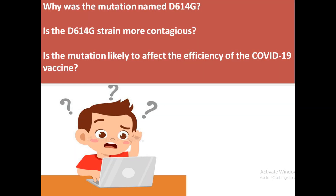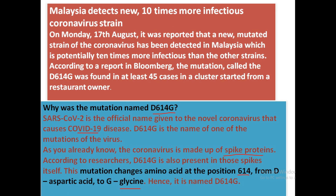The questions coming up are: why was the mutation named D614G, is the D614G strain more contagious, is the mutation likely to affect the efficiency of COVID-19 vaccines, and many more. On 17th August, the Malaysian Health Ministry announced that D614G, a mutation of SARS-CoV-2 which causes COVID-19, had been detected.